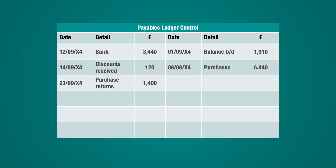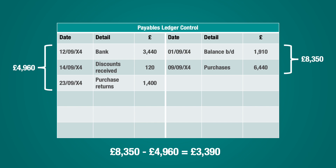I'll now run through one final example to reiterate the process. Heading back to Star Industries Limited, we've got another account — this time the payables ledger control — and we can see a number of transactions on the account. Your task again is to balance off the account, so let's repeat the process. Add up the debit transactions, which gives you a total of £4,960. Then add up the credit transactions, which comes to a total of £8,350. In this example the credits are higher than the debits, so there will be an overall credit balance on the account. Next, calculate the difference between the two sides, which gives you an amount of £3,390. This then needs to be entered onto the lower side of the account — in this case the debit side — and remember this is referred to as the balance carried down.